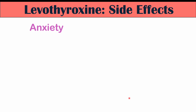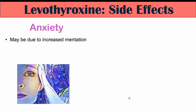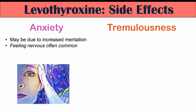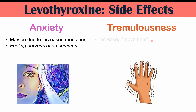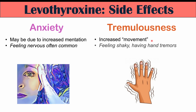Some main side effects include anxiety — with too high a dose, you can feel on edge or nervous. This may be due to increased mentation, one of the three M's. Another side effect is tremulousness, which is simply tremors — feeling shaky or having hand tremors. This is increased movement, another of the three M's, and can also be related to anxiety.